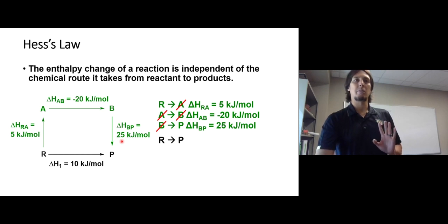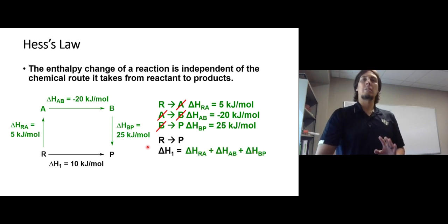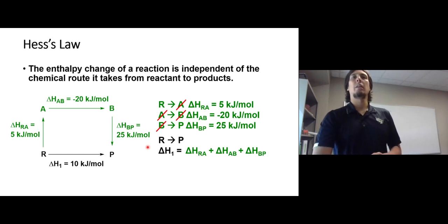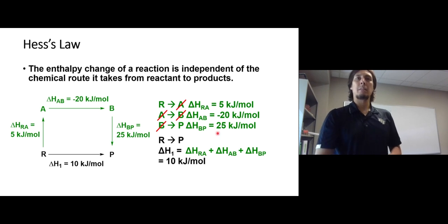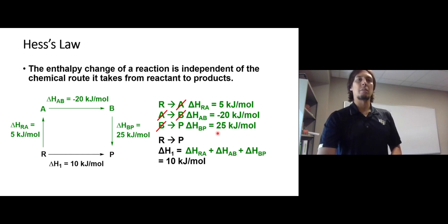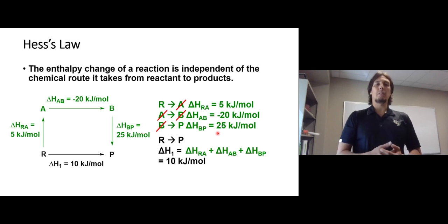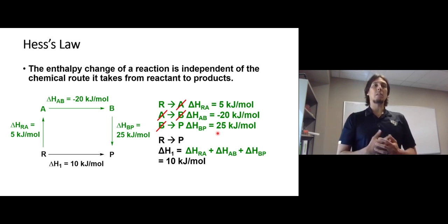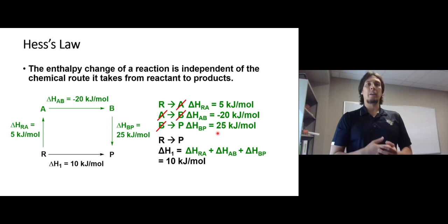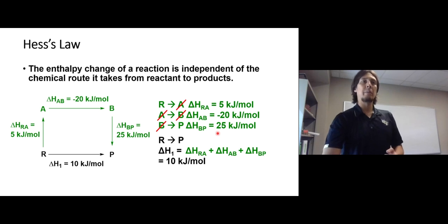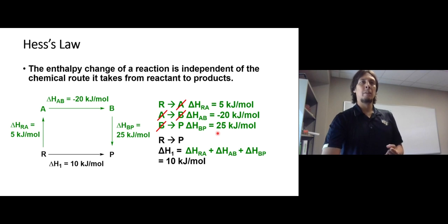Since we're going from R to P just like in the original reaction, we can add the enthalpy changes for each step: 5 minus 20 plus 25, which equals 10 kilojoules per mole — exactly the value of delta H1 for the direct conversion of R to P. This illustrates how Hess's law works: you can get the enthalpy change either by directly measuring the conversion of R to P or by summing the steps of an alternate route.